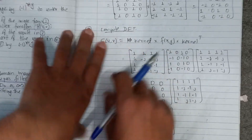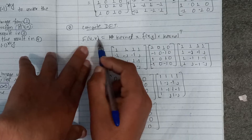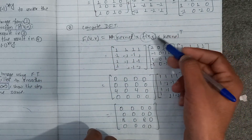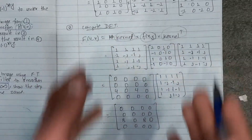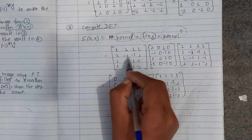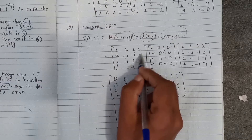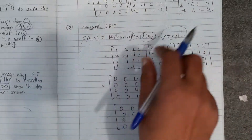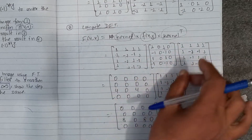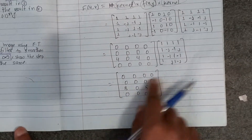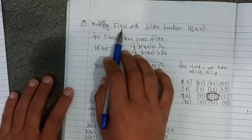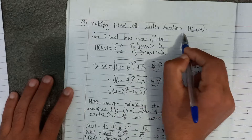Compute DFT — discrete Fourier transform. We can calculate the Fourier transform F(u,b). How do we do the kernel DFT? The kernel is: 1, 1, 1, 1; j1, j1, 0, 0, 0, 0, 0...